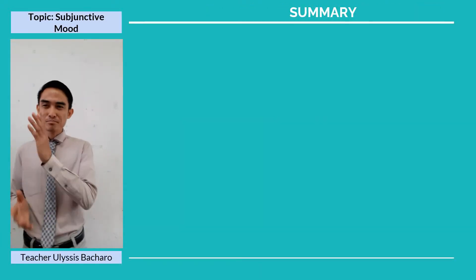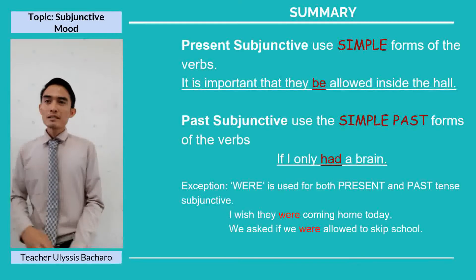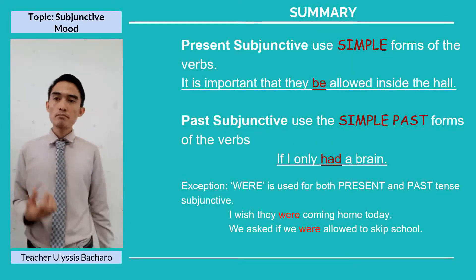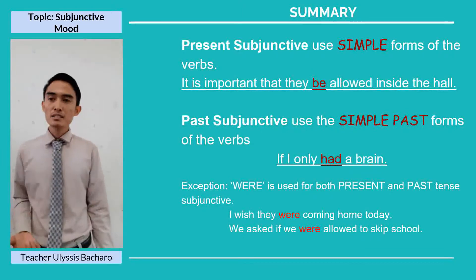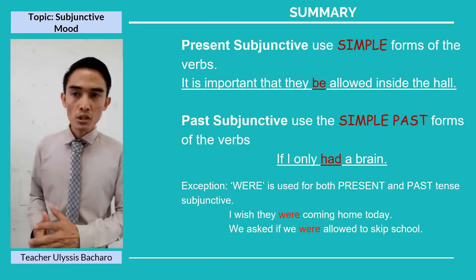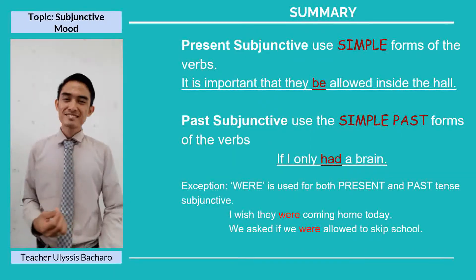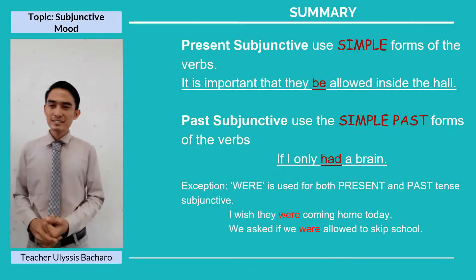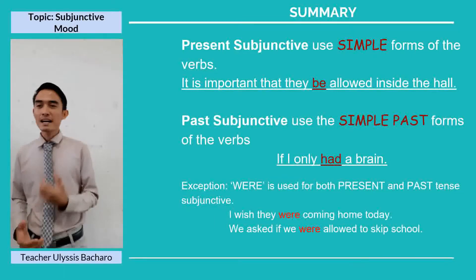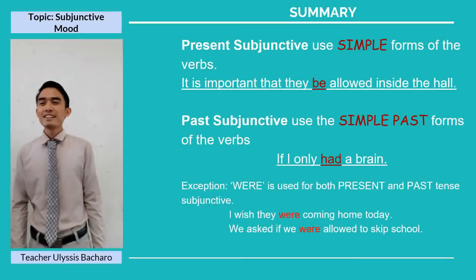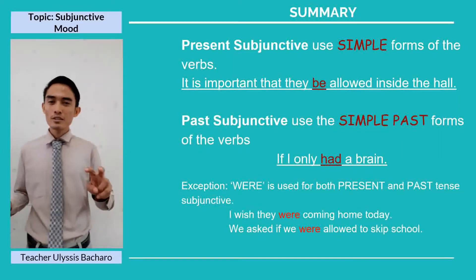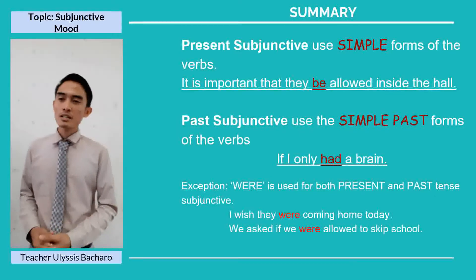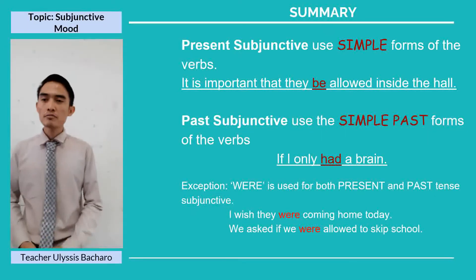Now let's proceed to the summary. In summary, the present subjunctive uses simple forms of the verbs. For example: 'It is important that they be allowed inside the hall' — using 'be' as the simple form. For the past subjunctive, it uses the simple past forms of the verbs. For example: 'If I only had a brain' — using 'had' instead of 'have,' supposing I don't have a brain. The exception is the verb 'were,' which is used for both present and past subjunctive, as in: 'I wish they were coming home today' and 'We asked if we were allowed to skip school.'